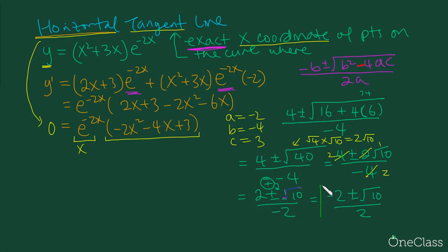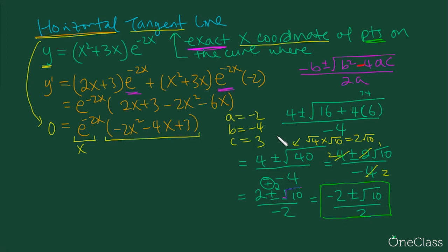This is how we find the exact x-coordinates — plural, because of the ± — of the points on the curve where the slope is zero, meaning the tangent line is horizontal. Be mindful of the nature of exponential and polynomial functions, factoring, and the quadratic formula. This question builds on basic calculus knowledge, understanding of tangent lines, and what the slope equals when horizontal.